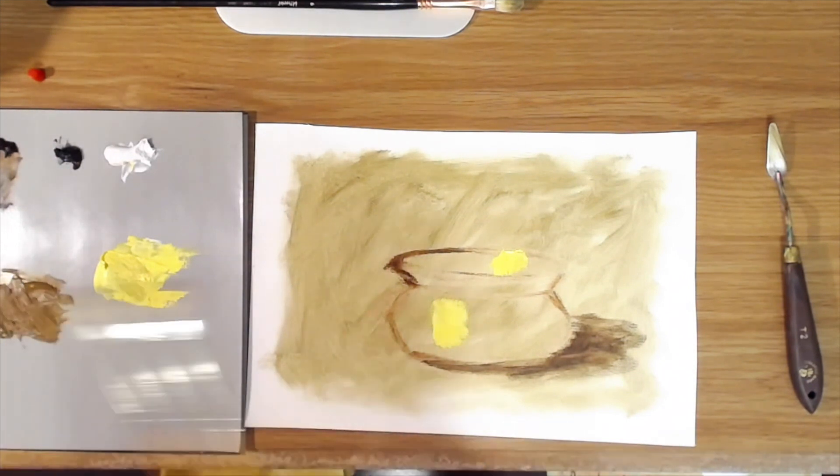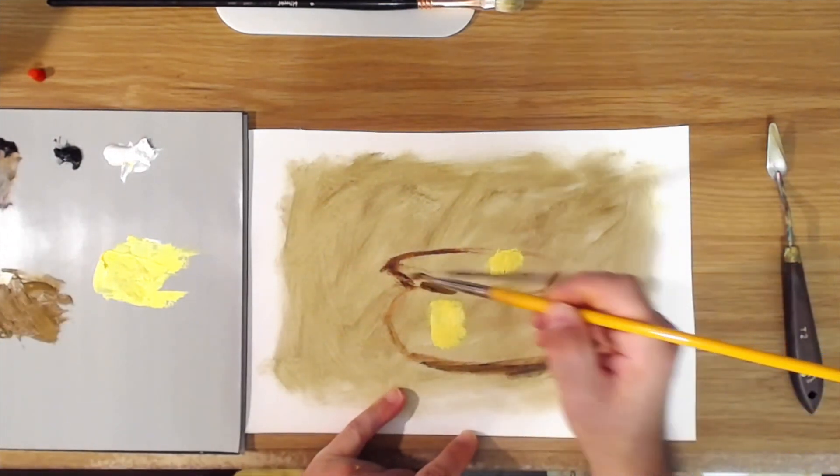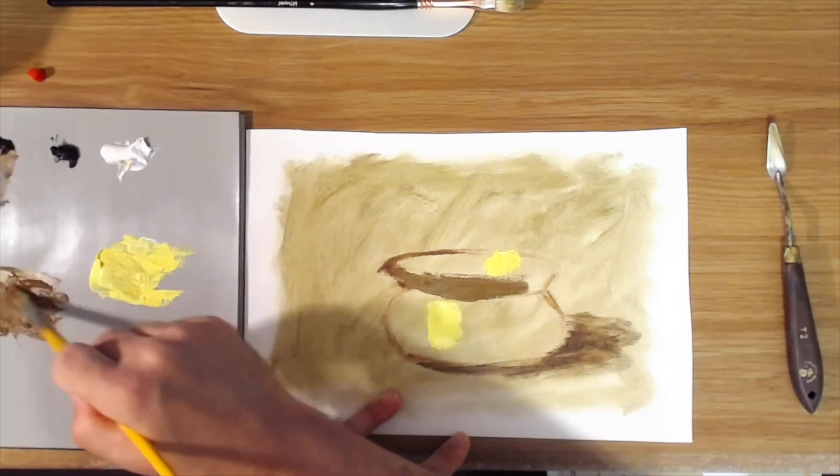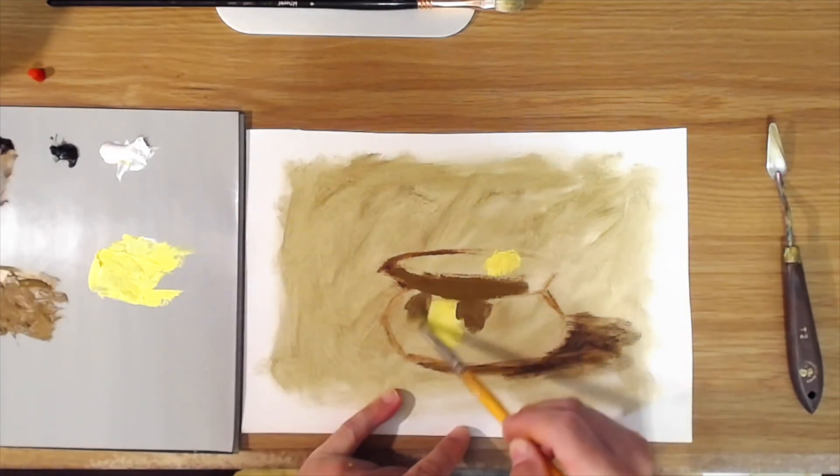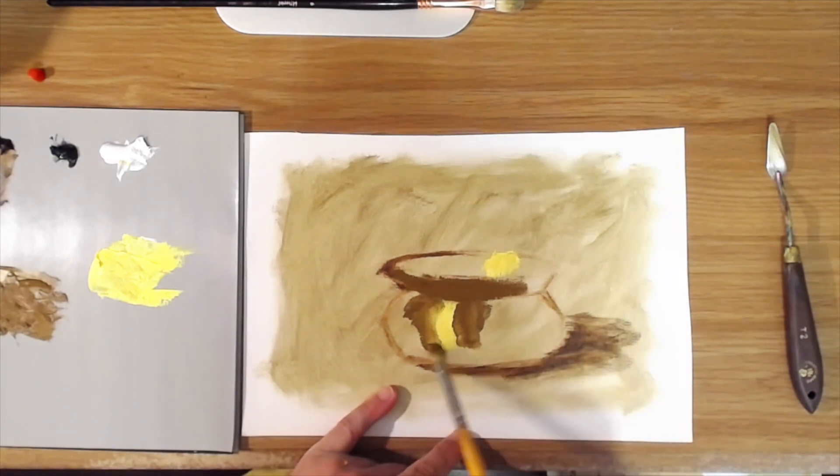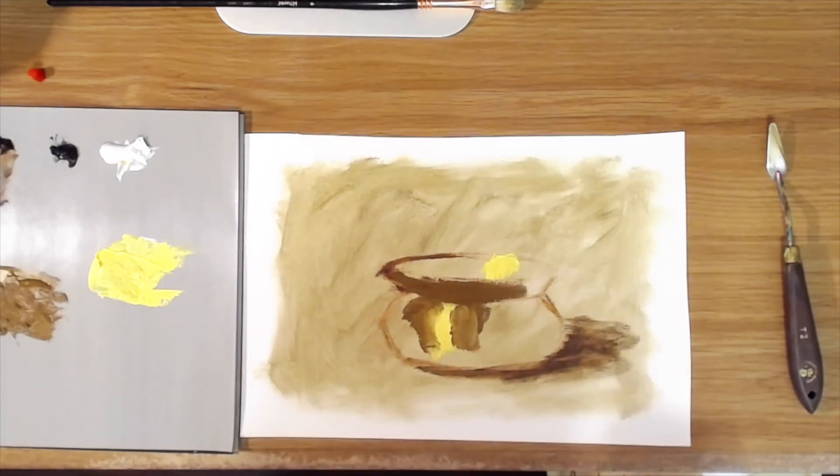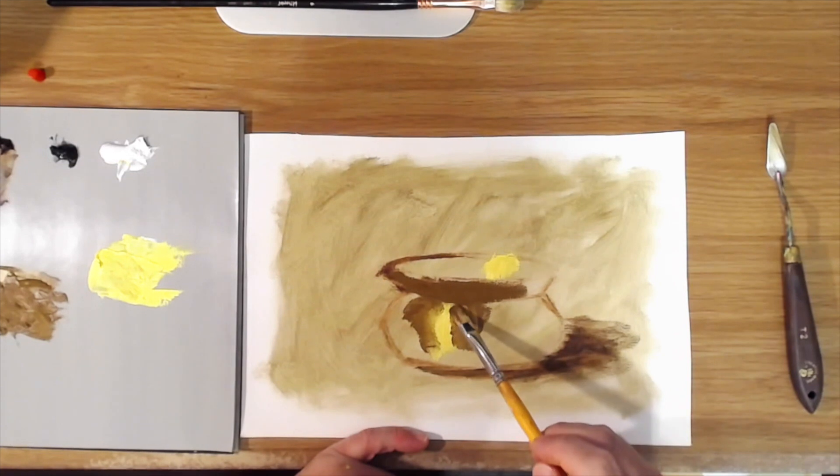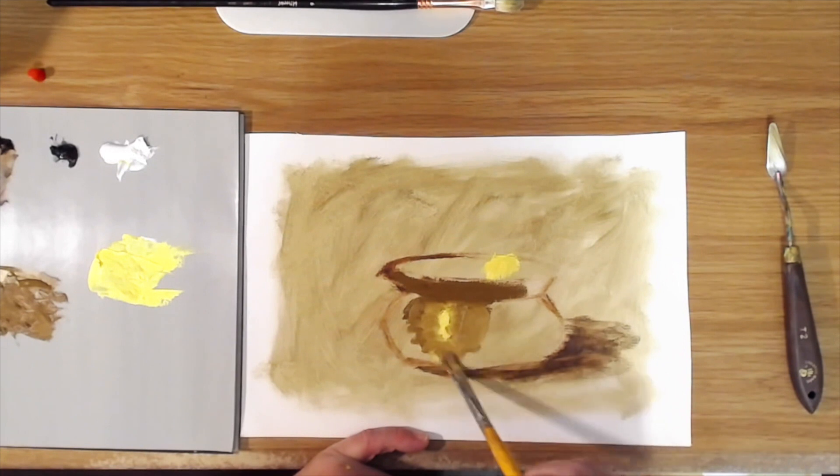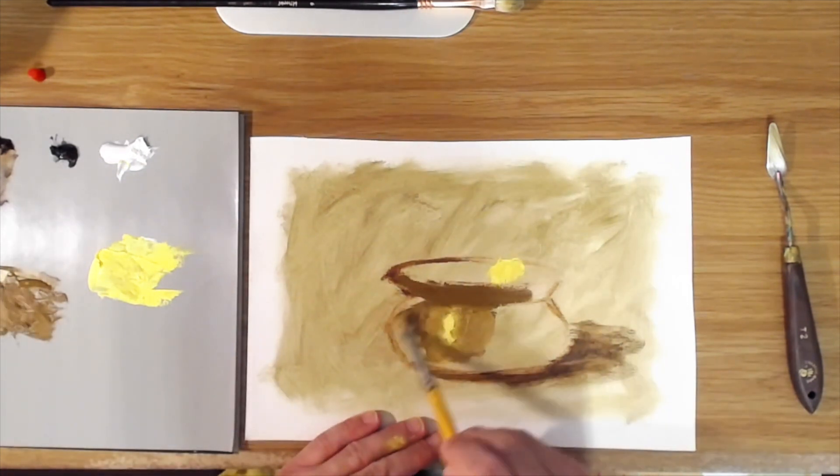Once we've mixed up this basic color for the bowl, we can start laying that in. I'm just going to do this roughly here. We'll come in and cut the highlight down with our brush like that, and it kind of mixes in and makes a little bit of that halo area around the highlight. Then just leave a little bit of it, and it's also giving us our lighter area on the brass.